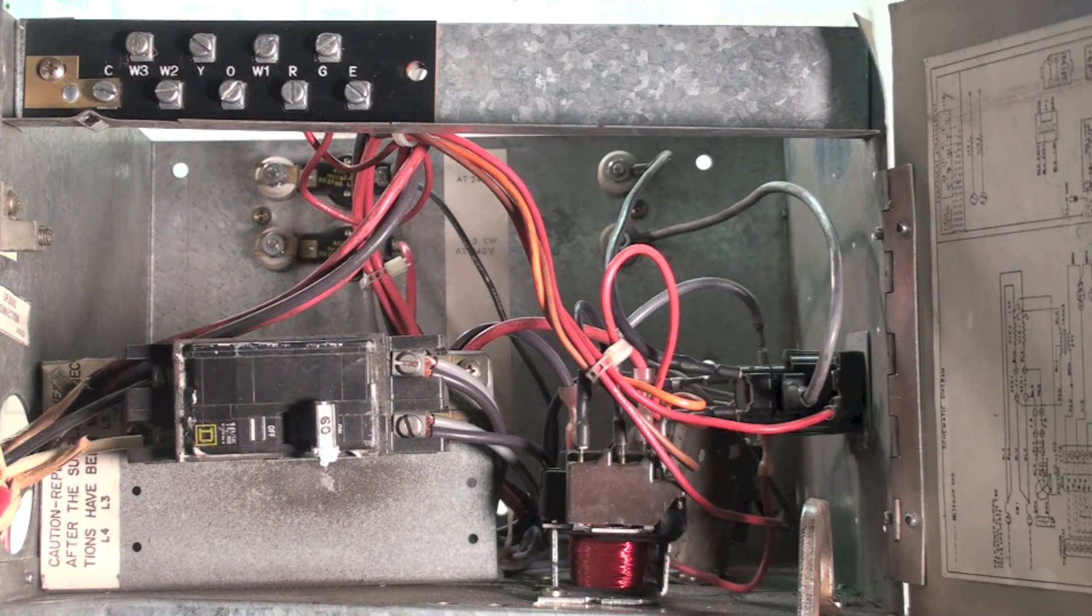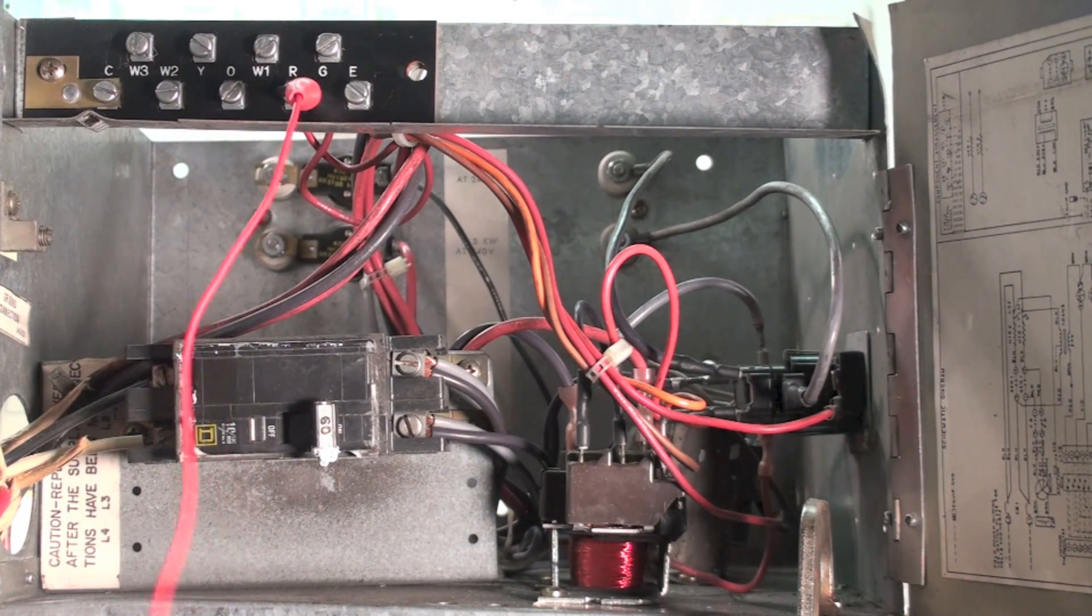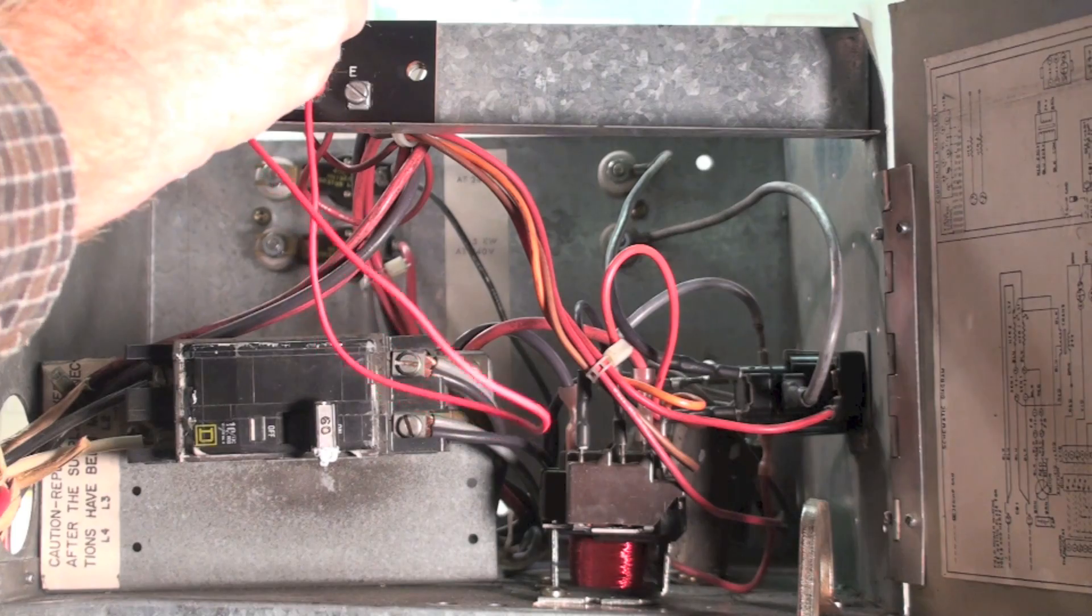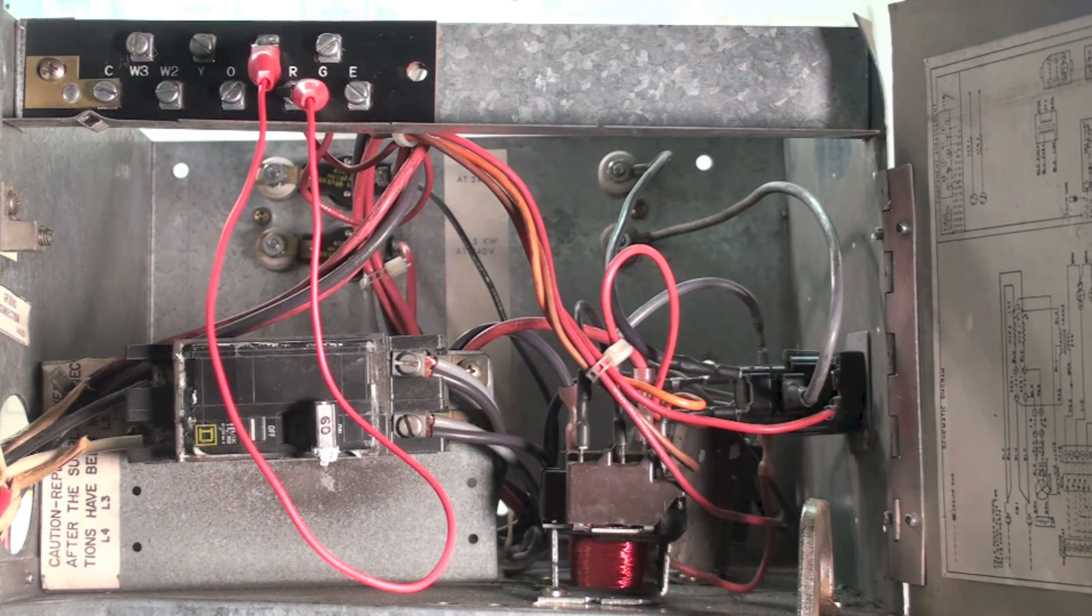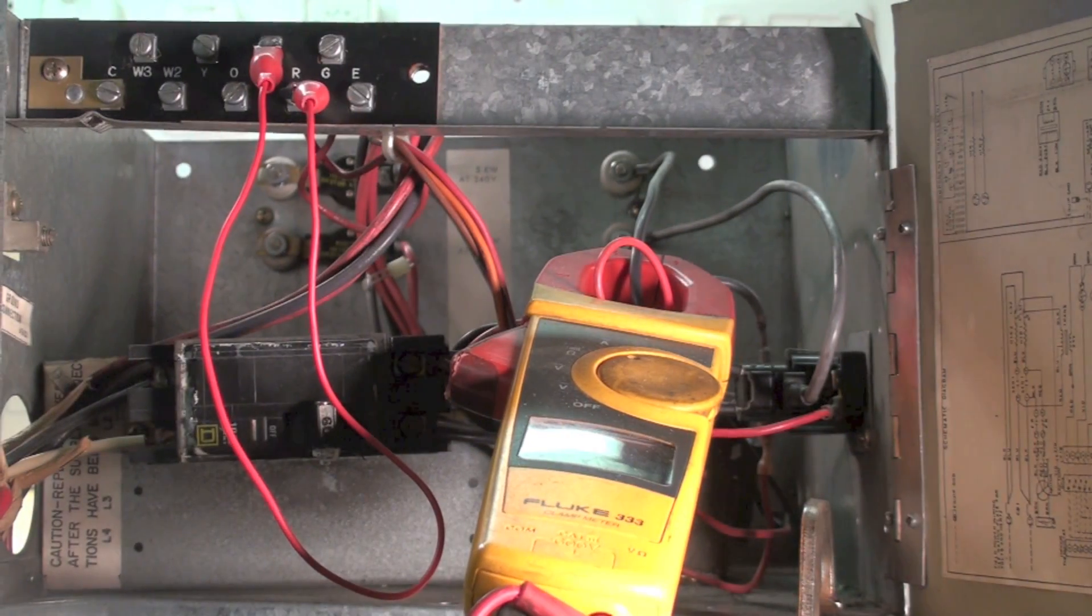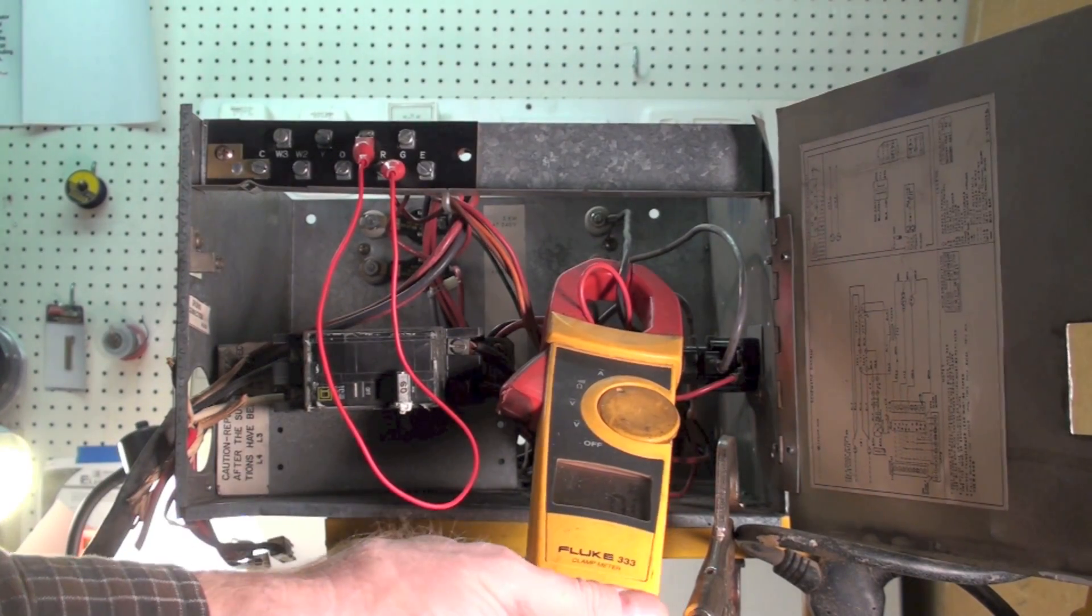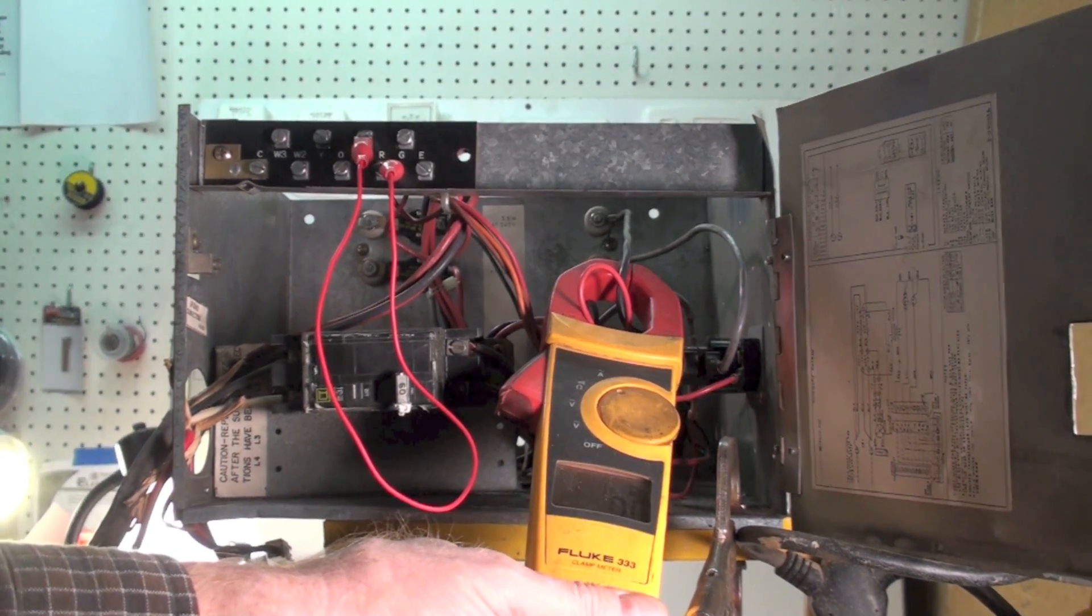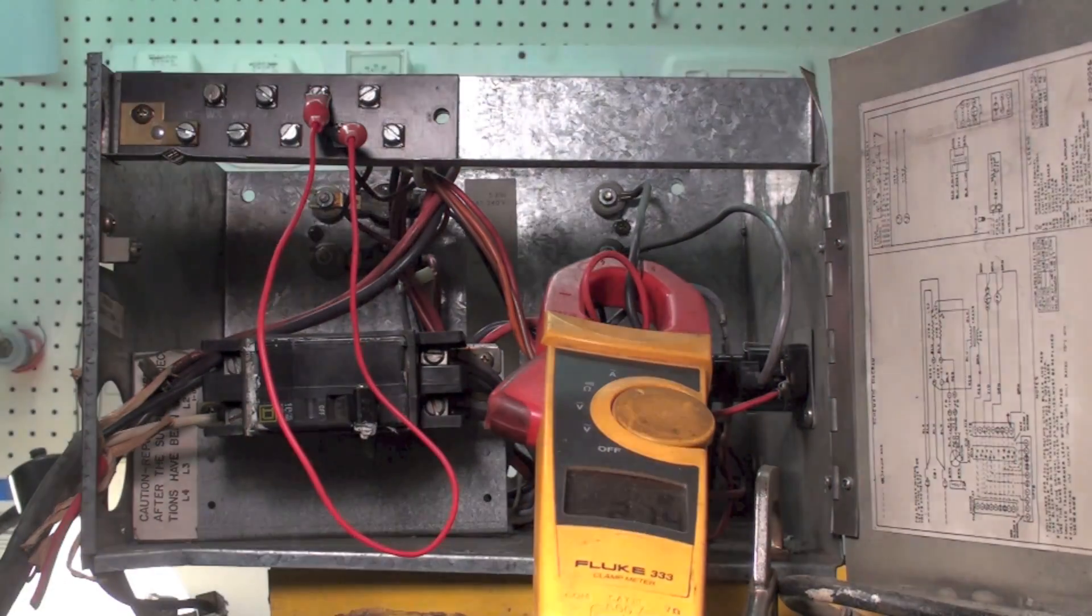So you may have the thermostat turned up, or you can do like I'm doing right here, and I'm going to jump from R to W1. Right after I do that, I'm going to go to this top sequencer. See if I can get that to where you can see it. You can see that element's on.